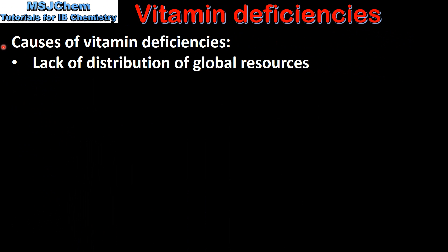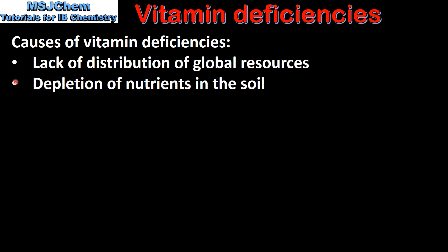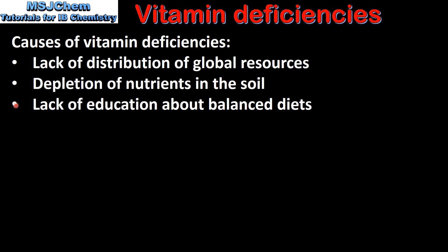Next we list the causes of vitamin deficiencies. The first is lack of distribution of global resources. Next is the depletion of nutrients in the soil. Lack of education about balanced diets. And finally, over-processing of foods.